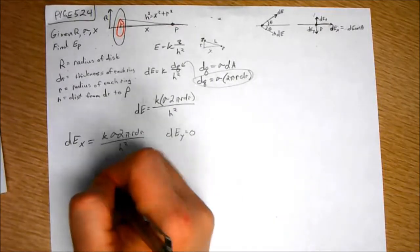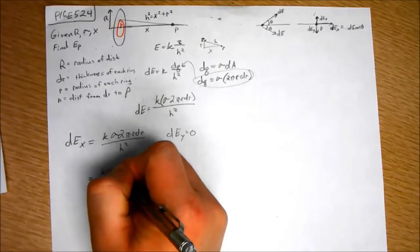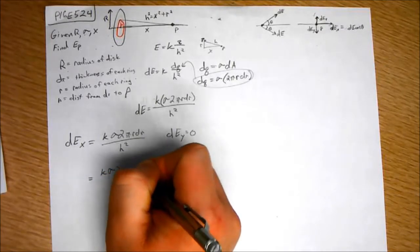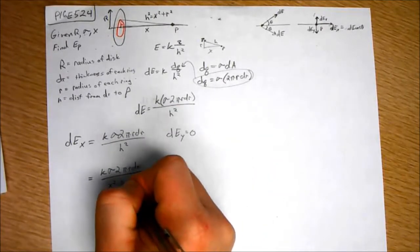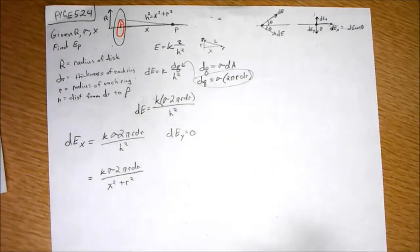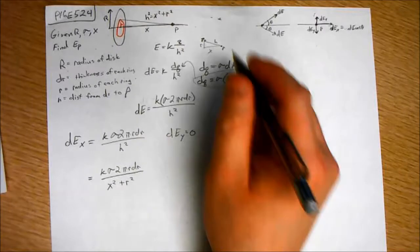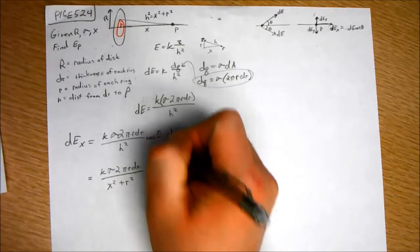What is H squared? We can expand on that. H squared is X squared plus R squared. Oh gosh, I forgot the cosine of theta. Sorry, guys.